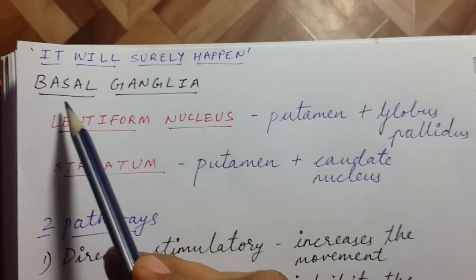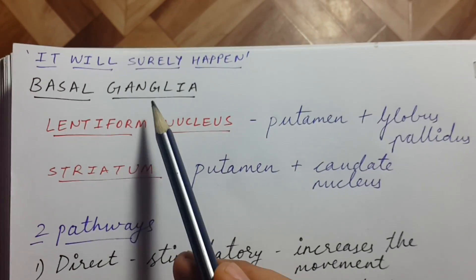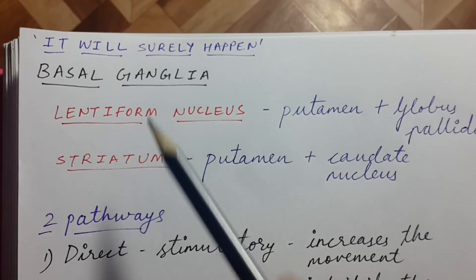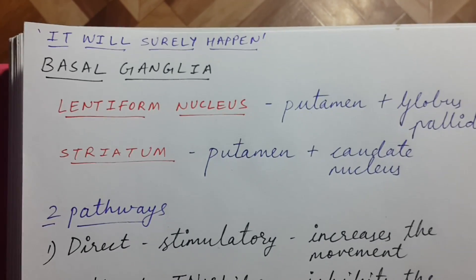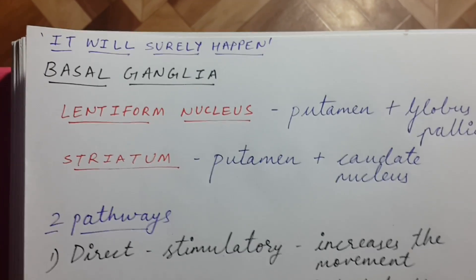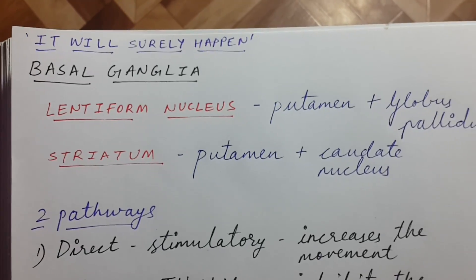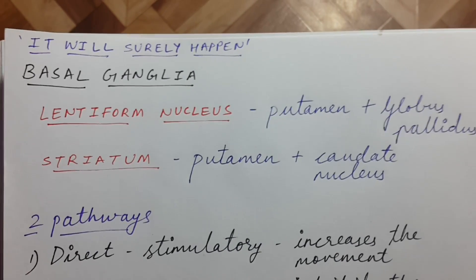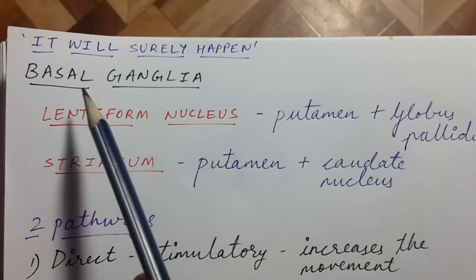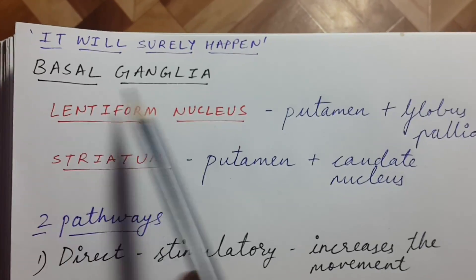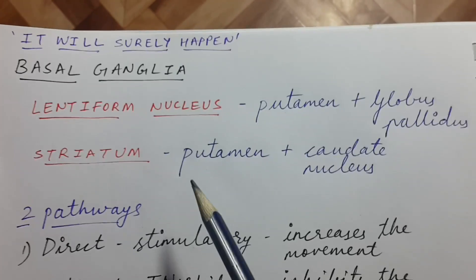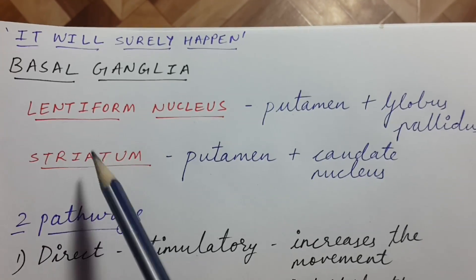Hello everyone, today we will be discussing basal ganglia. The main function of basal ganglia is to plan the motor movement and make the movement possible. Before initiating or producing any kind of movement, the cortex first consults basal ganglia — that is the main function of basal ganglia.